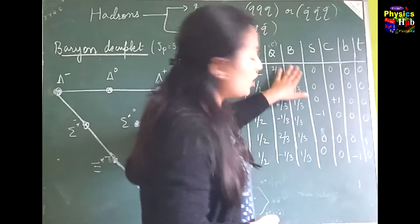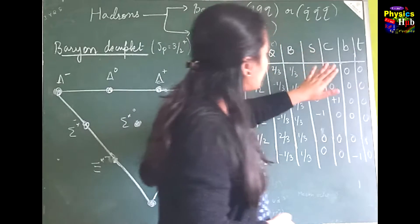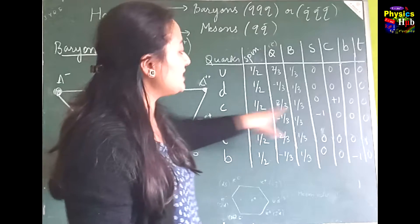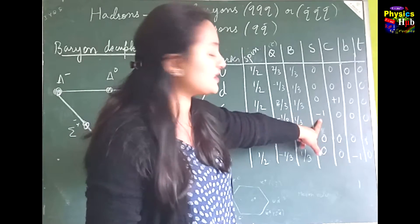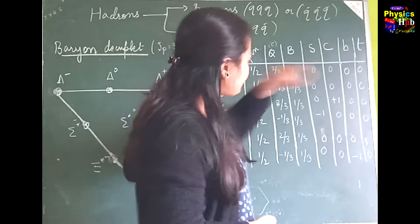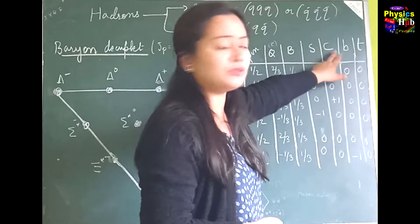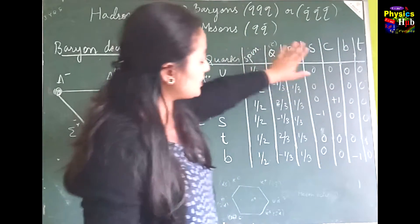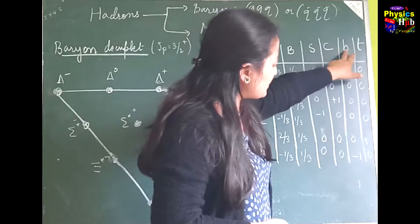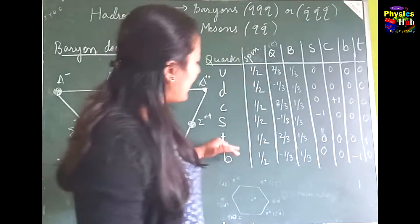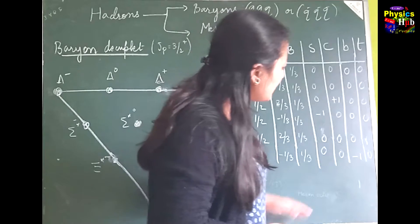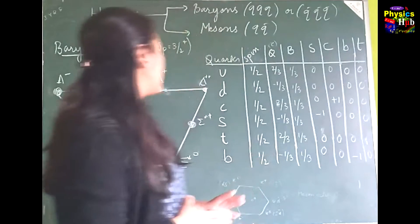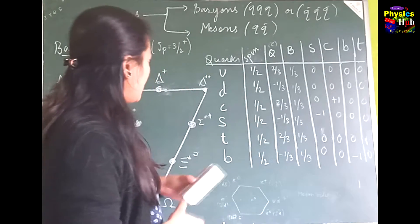Regarding flavor quantum numbers: all quarks except the strange quark have strangeness zero, while the strange quark has strangeness −1. The charm quark has charmness +1, all others have charmness zero. The bottom quark has bottomness −1, and the top quark has topness +1.